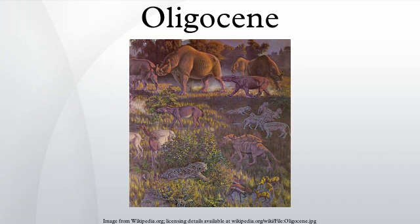In North America, subtropical species dominated with cashews and lychee trees present, and temperate trees such as roses, beeches, and pines were common. The legumes spread, while sedges, bulrushes, and ferns continued their ascent.